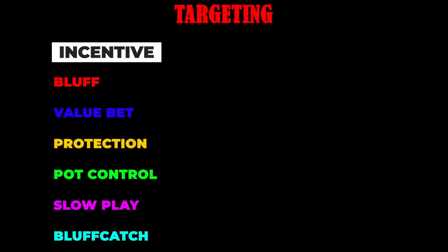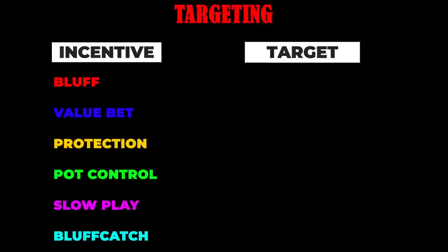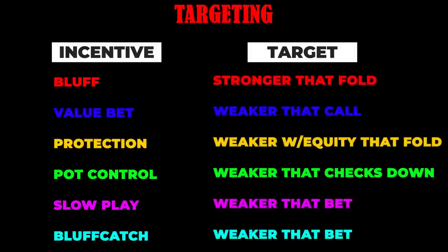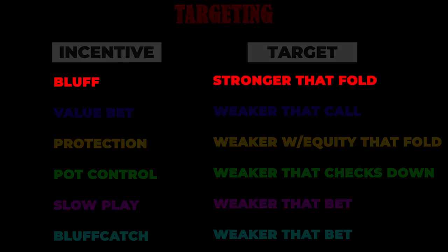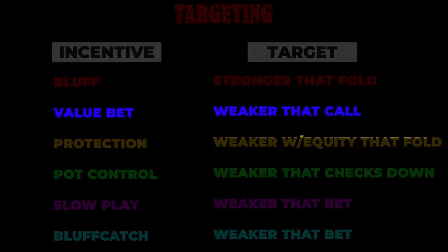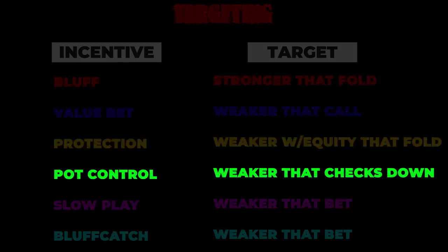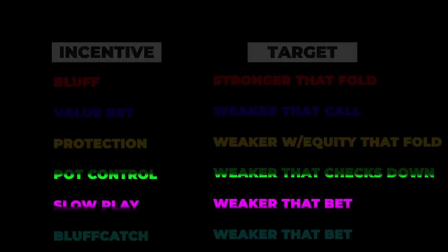First, you assess the primary incentives for your hand based on its strength, and then you assess the likely combos in your opponent's range that match that incentive. The more hands you can think of, the greater the EV will be for following that incentive. Targeting is effective because it allows you to specifically focus on the regions of your opponent's range that are most relevant to your hand's incentive.